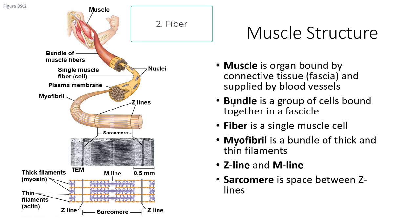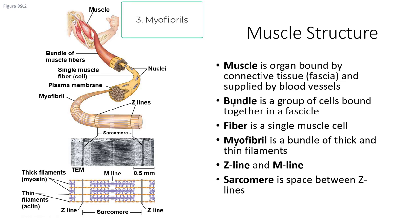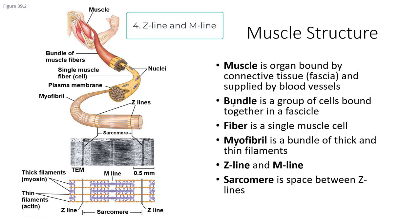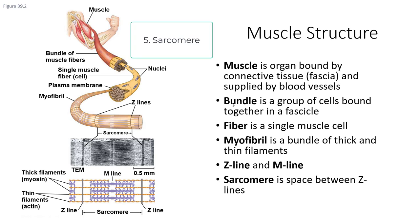A single muscle cell is called a fiber, and that fiber has a bunch of myofibrils within it. A myofibril is a bundle of thick and thin filaments, also known as myosin and actin. These are organized such that they give Z lines and M lines. The Z line is where you have actin but not myosin, and the M line is where you have myosin but not actin. The space between two Z lines is called a sarcomere.